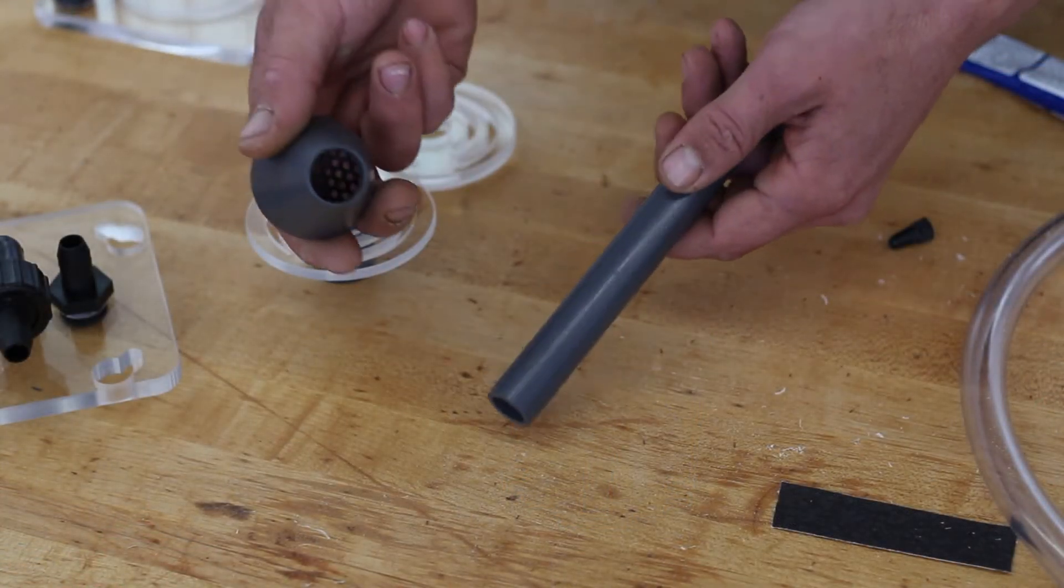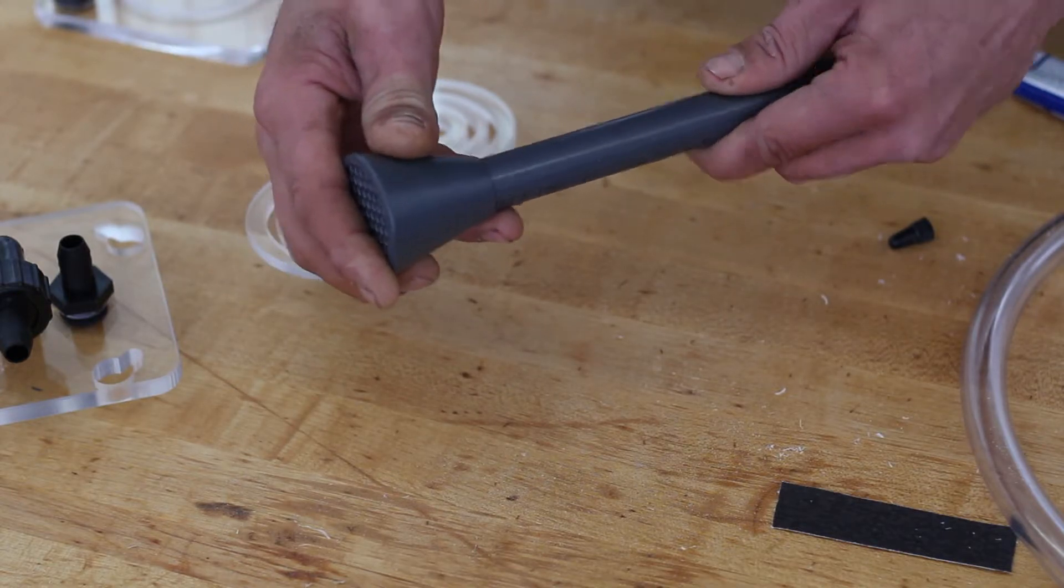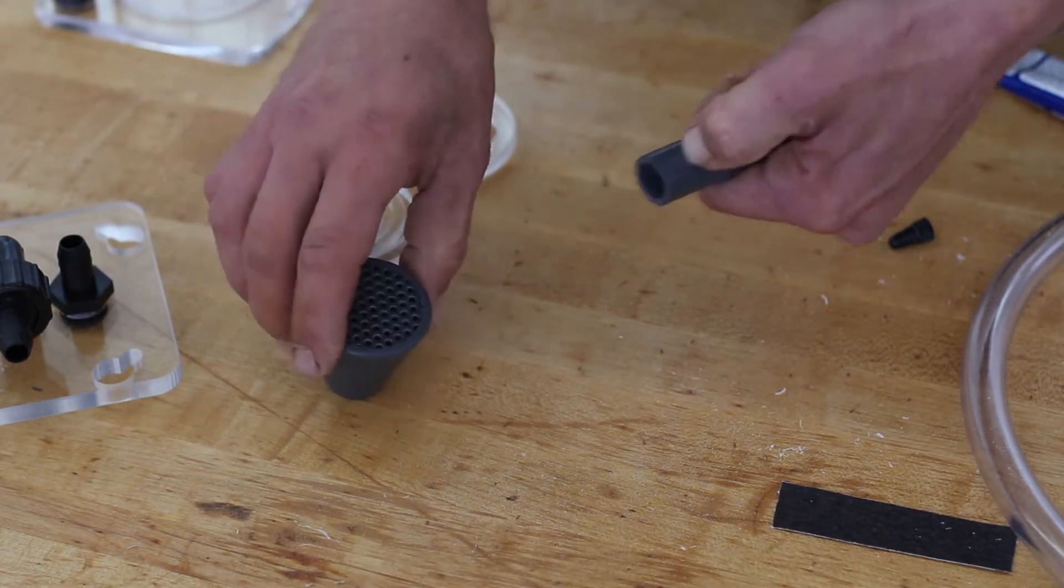Now that the tube is cut, we can glue on the nozzle. I'm marking the pipe about three-eighths to half an inch with my thumbnail here and then applying a bit of glue.